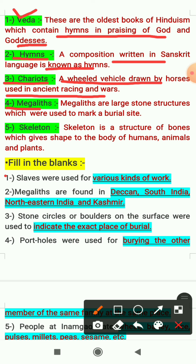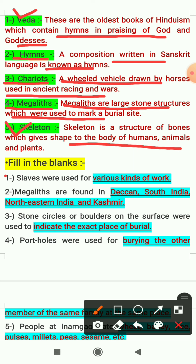The fourth keyword is megaliths. Megaliths are large stone structures which were used to mark a burial site. The fifth keyword is skeleton. A skeleton is a structure of bones which gives shape to the body of humans, animals and plants.